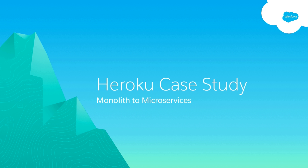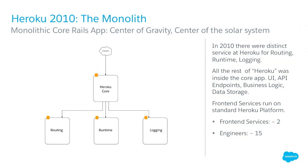Let's talk about Heroku's own journey from monolithic architecture to microservices. Early on, Heroku had one big core application with almost everything — all user-facing behavior — talking to routing, runtime, and logging back-end services. With around 15 engineers and maybe 5 working on the core at any time, a monolith worked fine at that point.